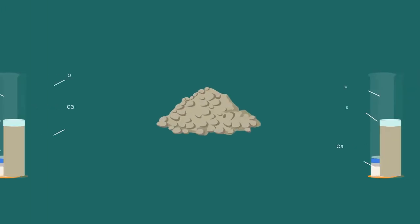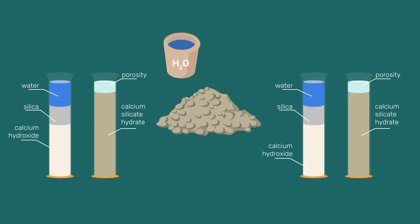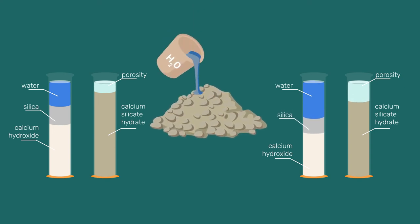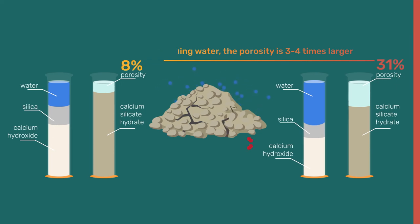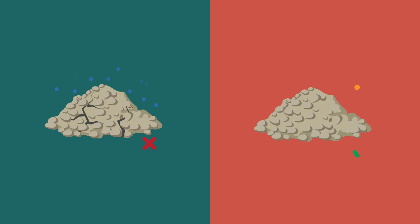It should be noted that to obtain a workable mortar or concrete, more water is needed than required by the chemical reaction. This strongly affects the porosity. For example, doubling the water content causes the final porosity to increase from 8 to 31%. This decreases the strength of the final material and can cause cracking from drying shrinkage.